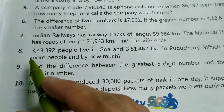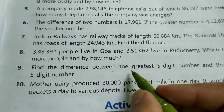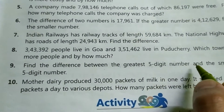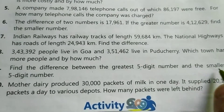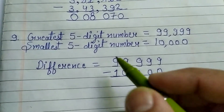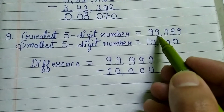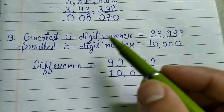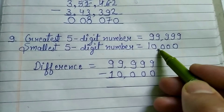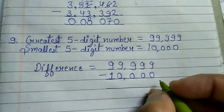Question number 9. Find the difference between the greatest 5-digit number and the smallest 5-digit number. Firstly, the greatest 5-digit number is 99,999 and the smallest 5-digit number is 10,000.